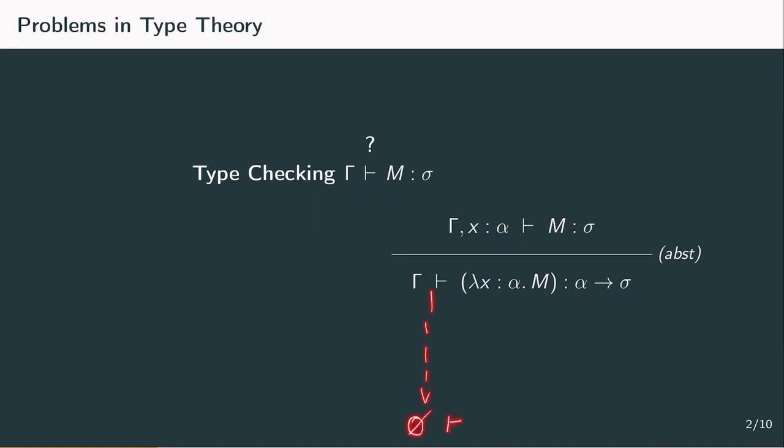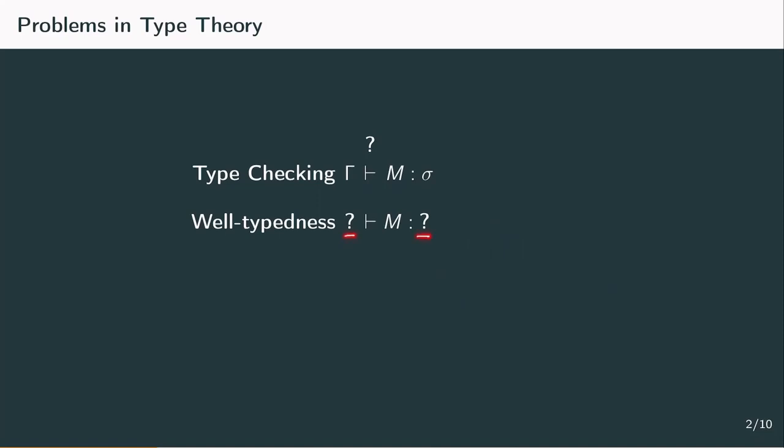Then again, we might ask whether a term is typable at all, if it's legal. So, we want to find a context and a type such that the judgment gamma yields m of type sigma can be derived.